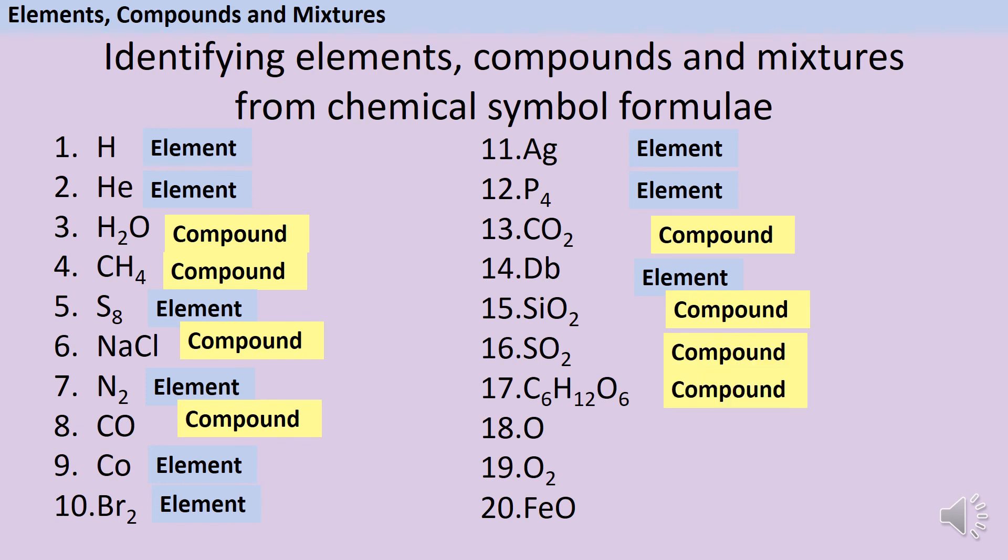This one's glucose, which is the sugar that's made during photosynthesis and used up in respiration. That's going to be really important when you're doing biology. Then we've got an atom of oxygen and a molecule of oxygen, both of which are elements. And finally, some iron oxide, which is a compound.